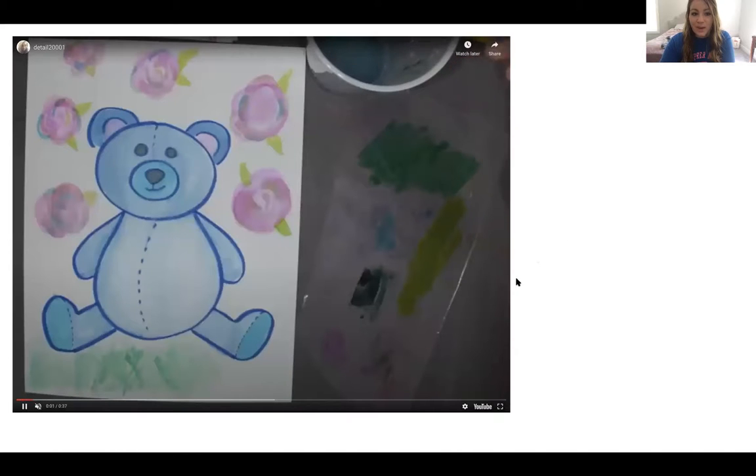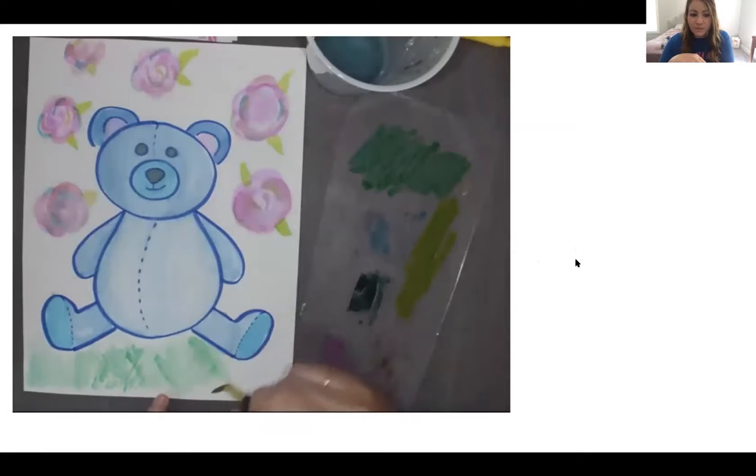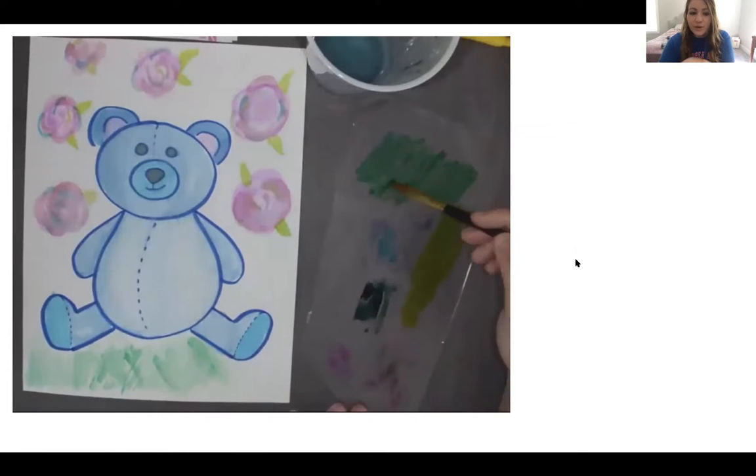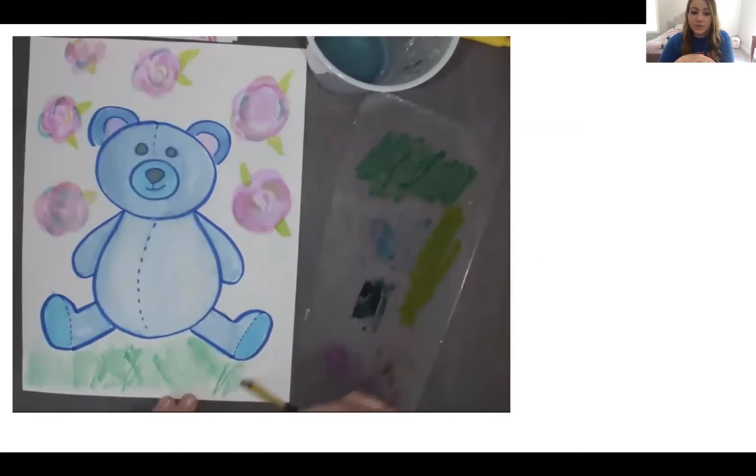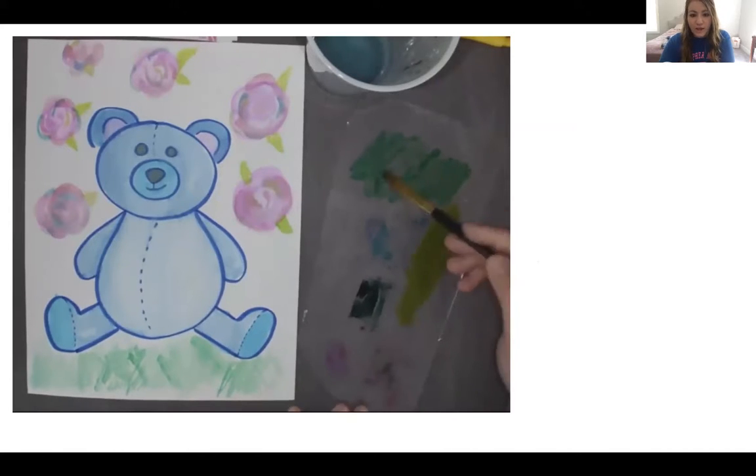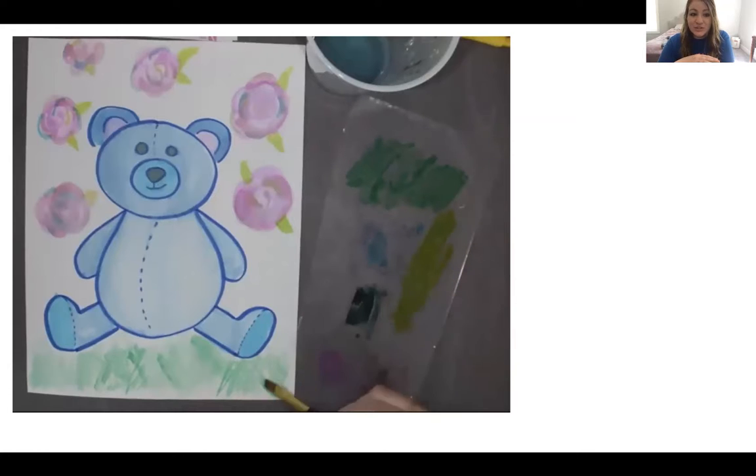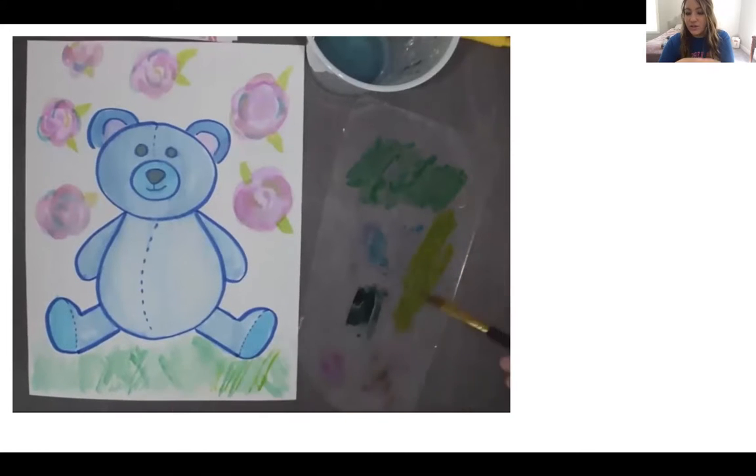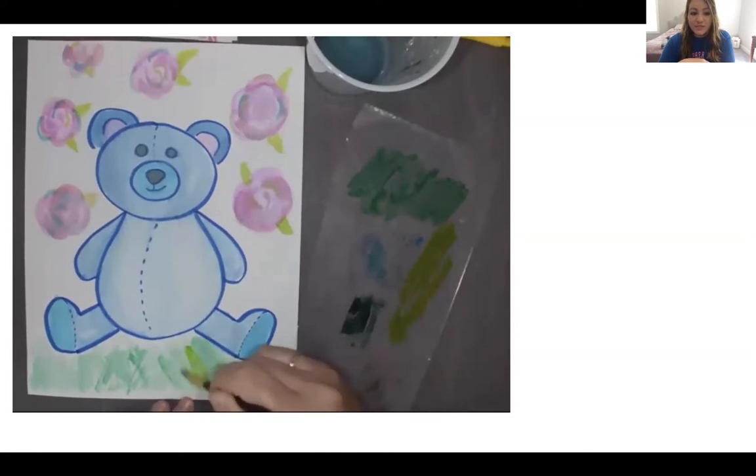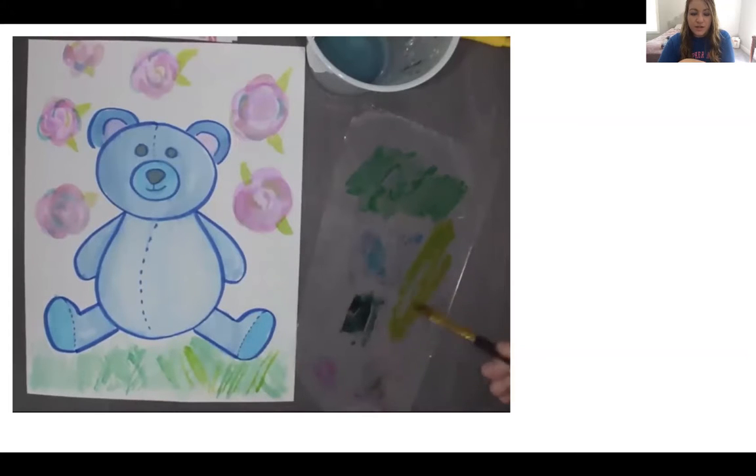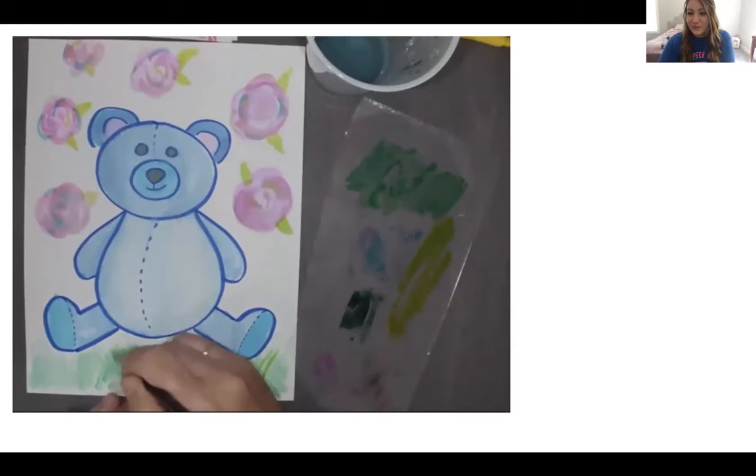So here I used some different colored markers to create some different detail in the background to create some flowers. So I just kind of layered different colors over top of each other. Here I'm going to show you I'm layering some different colored greens and so I could create the image of grass. So know that you're not stuck to just using one color. Watercolors are awesome for layering different colors on top of one another. So it's a lot of fun to play around with that.